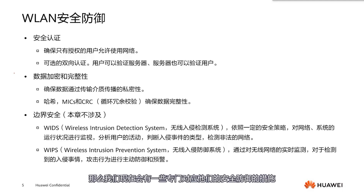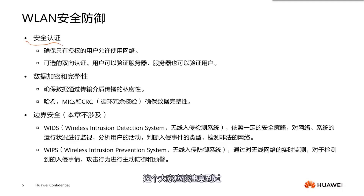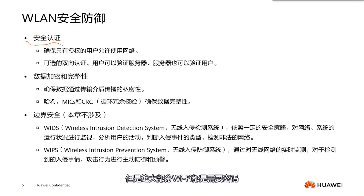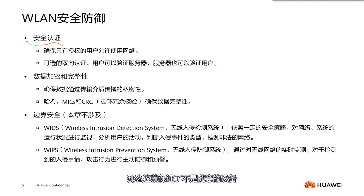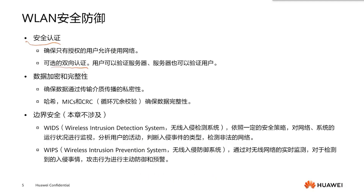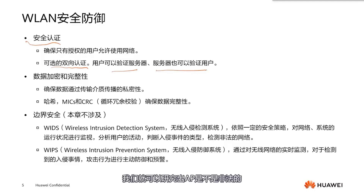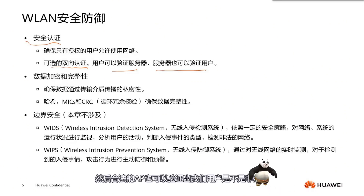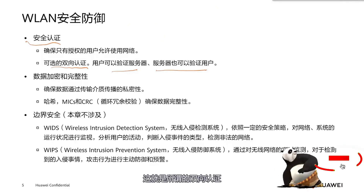The first security measure is secure authentication. When we go to public places, we find many Wi-Fi networks, but most of them require a password, ensuring that not just any device can access our network. Regarding secure authentication, we can also opt for mutual authentication. Users can authenticate the server, and the server can authenticate users. In this case, we can verify whether the AP is unauthorized, and a legitimate AP can also determine if a user is unauthorized. This is what we call mutual authentication.